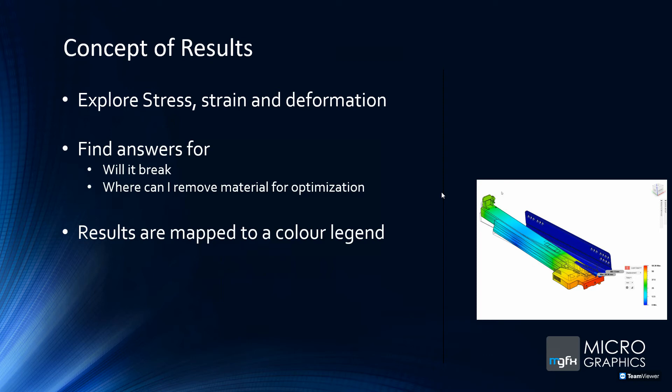With your results, you can explore stress, strain, deformation, temperature, and heat flux. These give you answers to: will it break, and where can I remove material for optimization? The results are very visual — mapped to a color legend that you can control — so you can see exactly what's happening at each point. There's also a probe where you can click on a point and see what's going on there.